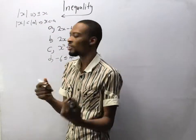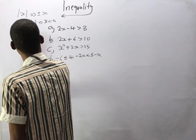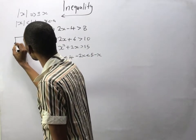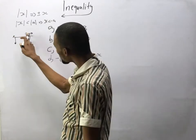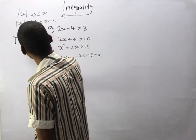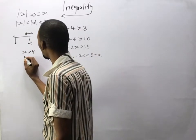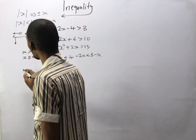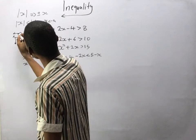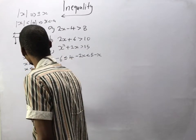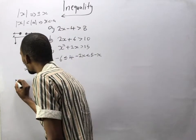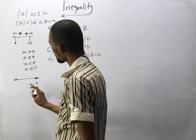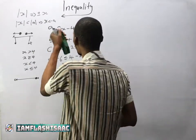There is also representing inequalities on a number line. If you have a point at 4 with an arrow pointing right and there is a hollow circle, this means s is greater than 4. If the circle is filled or dark, it means s is greater than or equals 4. If the arrow points left with a hollow circle, it means s is lesser than 4, and if the circle is filled, it means s is lesser than or equal to 4.